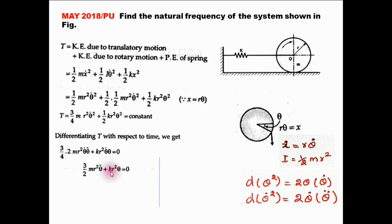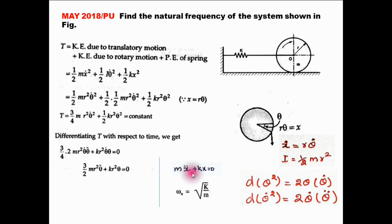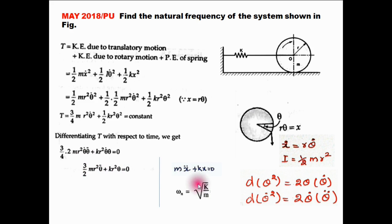Reducing this equation by cancelling theta_dot from both terms, we get the final equation. Comparing this with the differential equation of the spring-mass system, I can identify k_equivalent equals k·r² and m_equivalent equals 3/2·m·r². Substituting these into the natural frequency formula, the natural frequency of the system equals root of 2k/(3m) radian per second. This is the answer for this question.